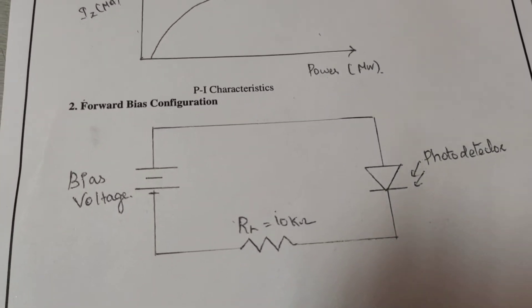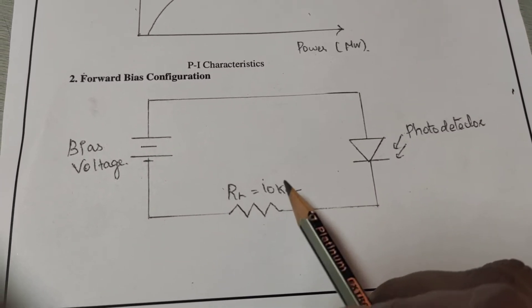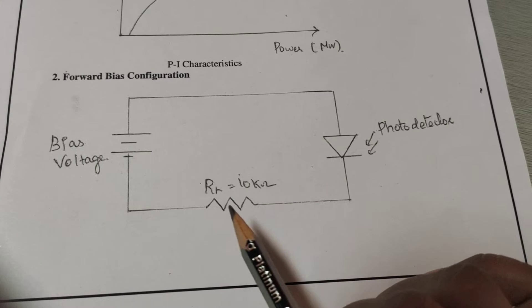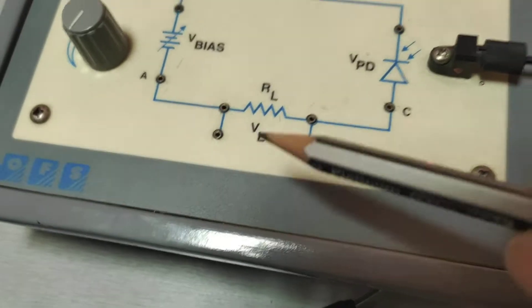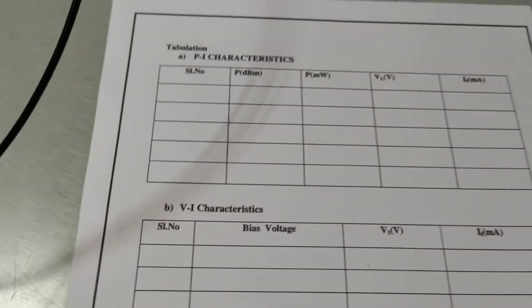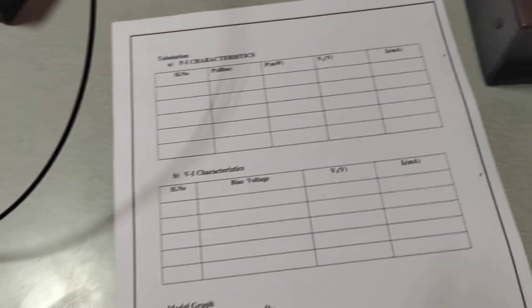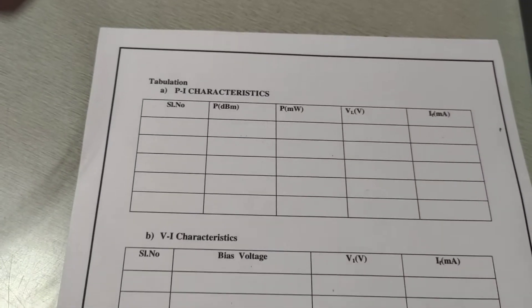Next is the photodiode under forward bias condition. In the forward bias configuration, we connect RL as 10 kilohm. The 10 kilohm resistor is connected across the appropriate point in the photodiode module. In both forward bias and reverse bias configurations, there are two observation tables.